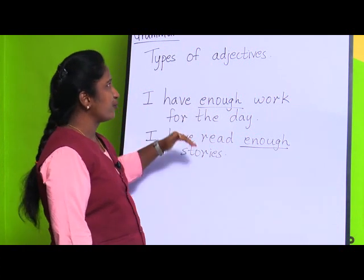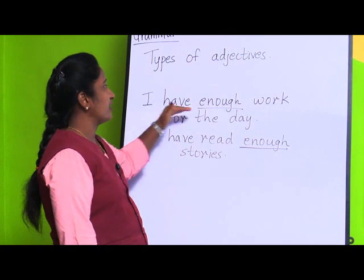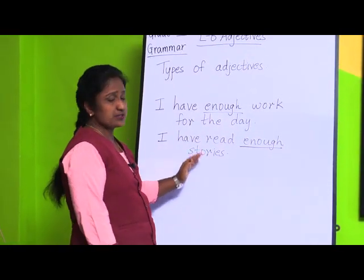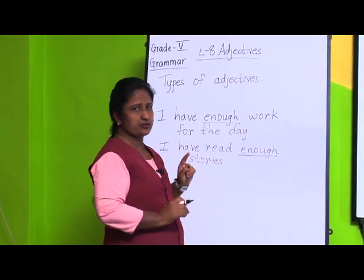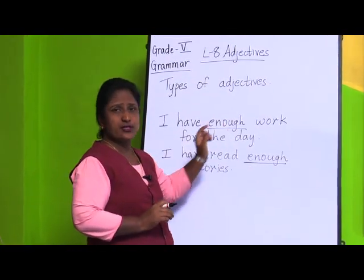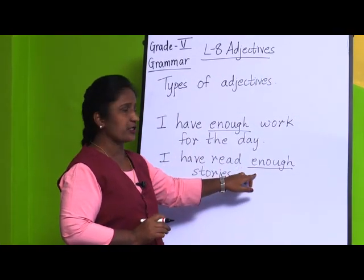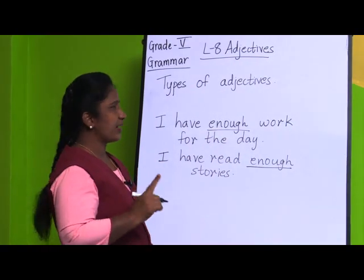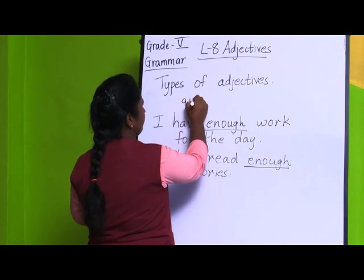If you see the sentences: 'I have enough food,' 'I have enough work for the day,' and 'I have read enough stories,' one word is common in all of them — that is 'enough.' Sometimes this adjective can be used for both adjectives of quantity and adjectives of number.